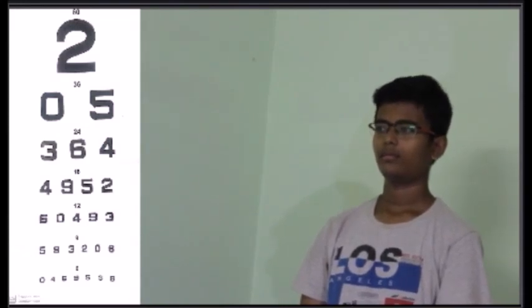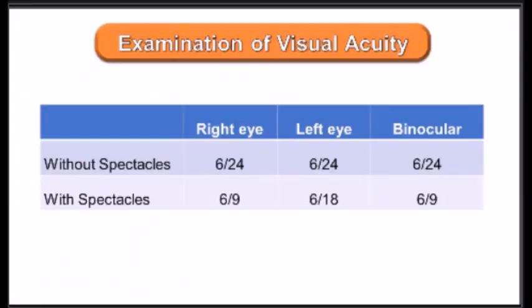That means his power has changed a little, so we need to correct his power. His binocular vision is 6/9, meaning what a normal person can read from 9 meters, this subject is able to read from only 6 meters. That means he has short-sightedness, i.e. myopia.